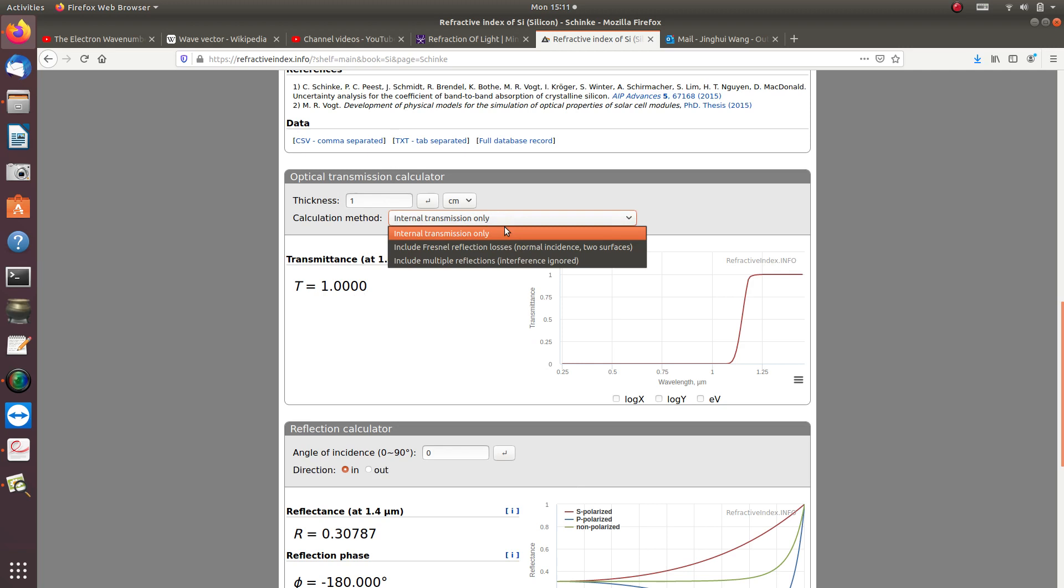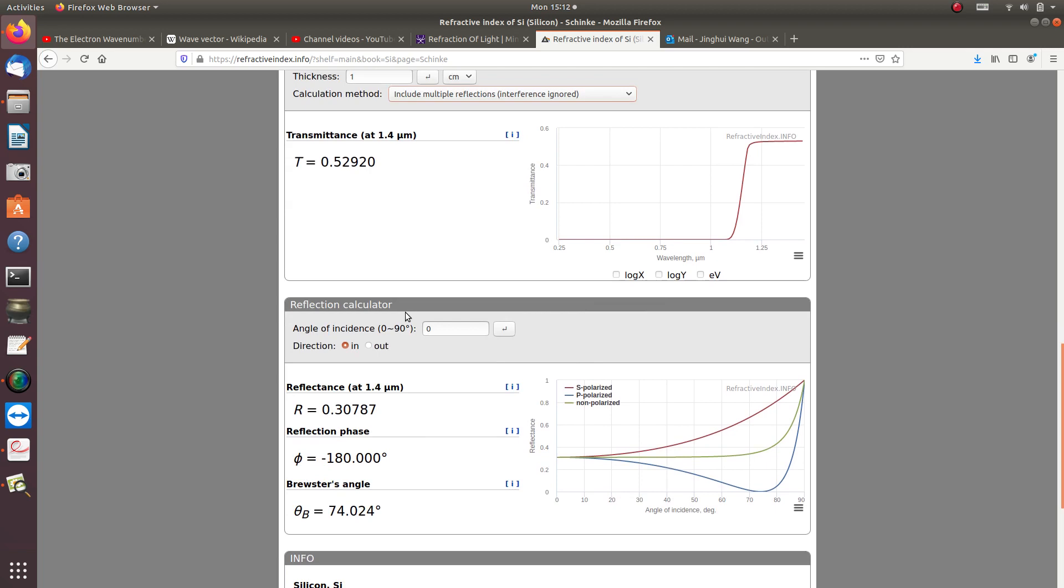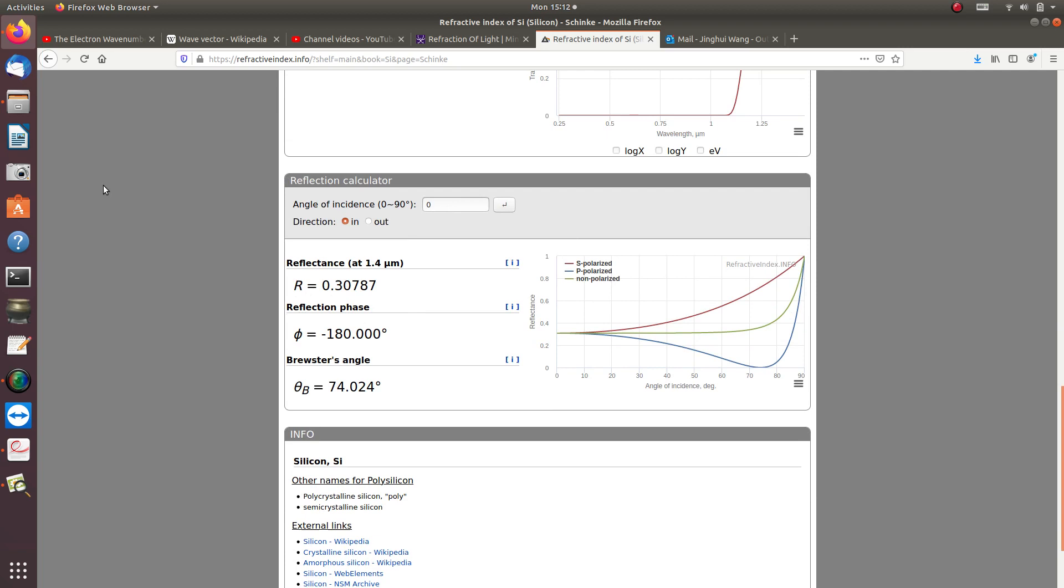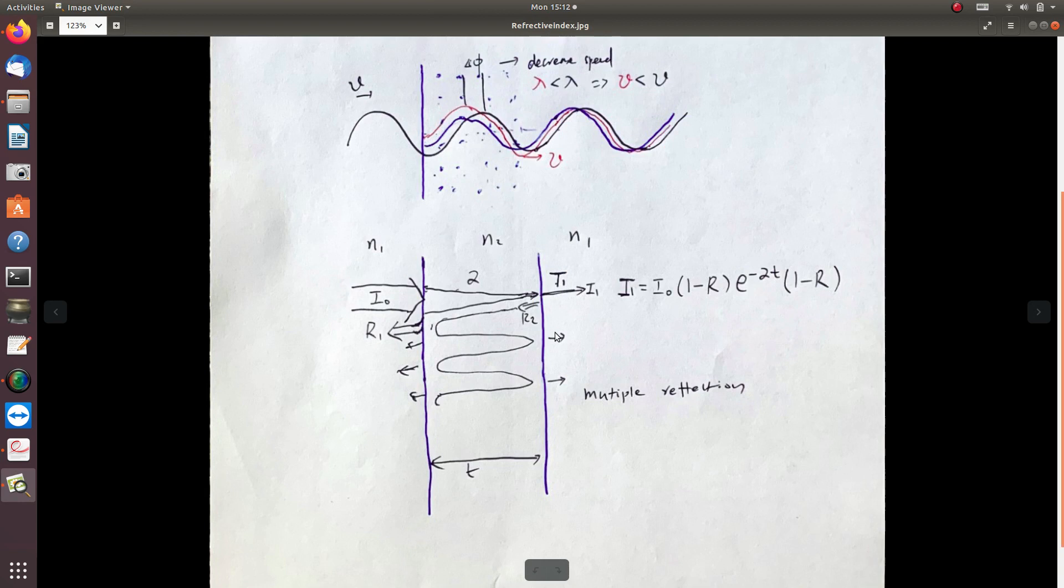But if you include multiple reflection processes, only half of the light will pass through. You can see there is reflectance but not transmittance listed. The reflectance is the same between the two media, but transmission depends on the thickness of the material.